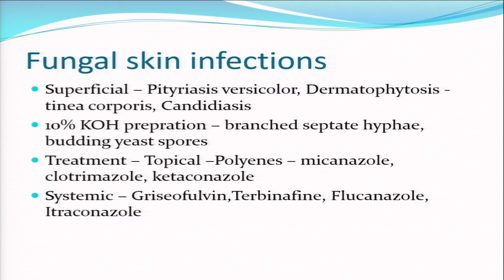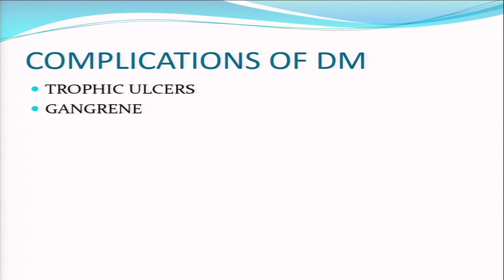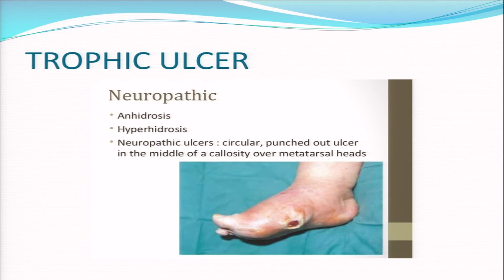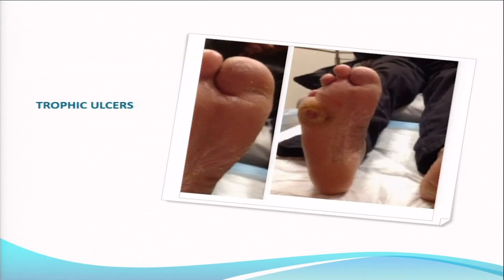Complications of diabetes include trophic ulcers and gangrene. For neuropathic ulcers, we take the help of diabetic foot consultants, plastic surgeons, and orthopedic surgeons to save the limb without amputation. Trophic ulcers and pressure sores are very commonly seen in patients who lack education about foot care - patient education plays a major role.